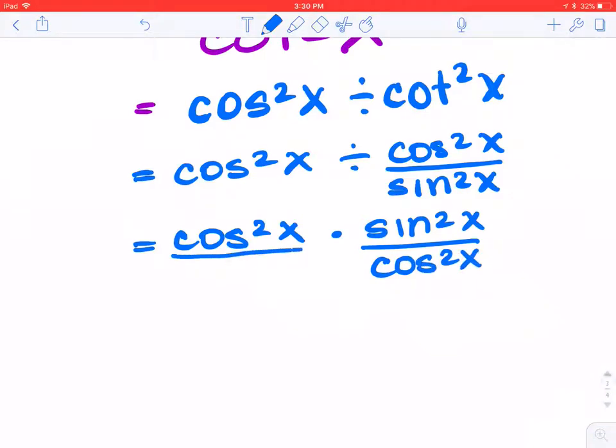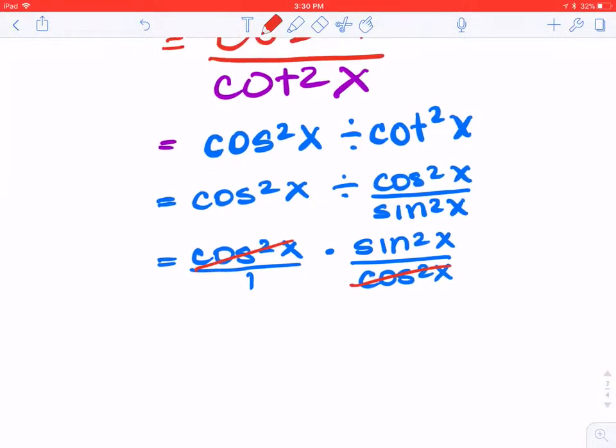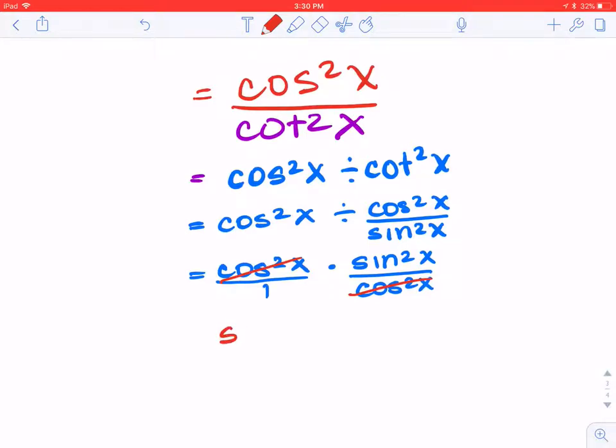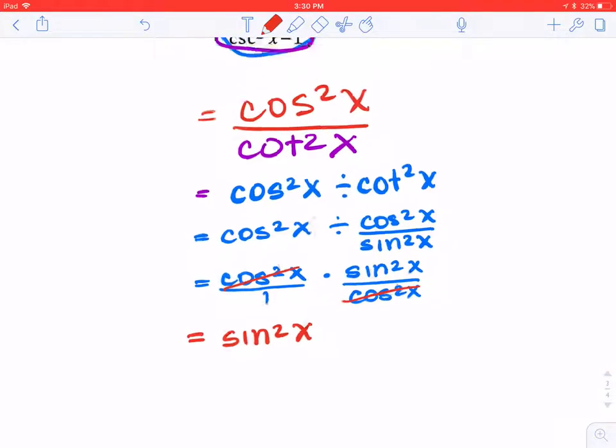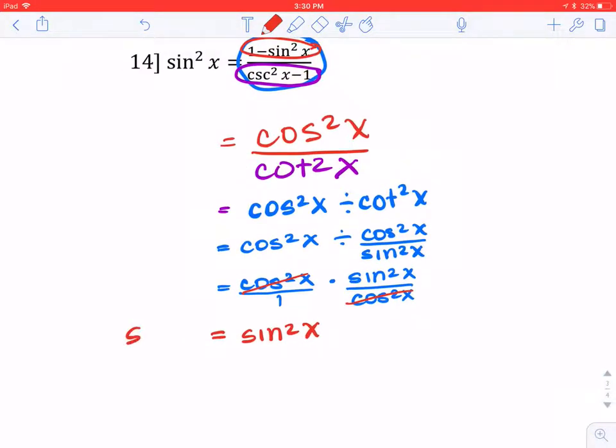If you'd like to put your first term over 1, so it looks like a fraction too, it might help you see that now you can simplify this. I see that I have a cosine squared over cosine squared. They simplify to 1, and all I'm left with is a sine squared. If you look at what you're trying to get to the left-hand side to be equal to, it is a sine squared. So this identity has now been established.